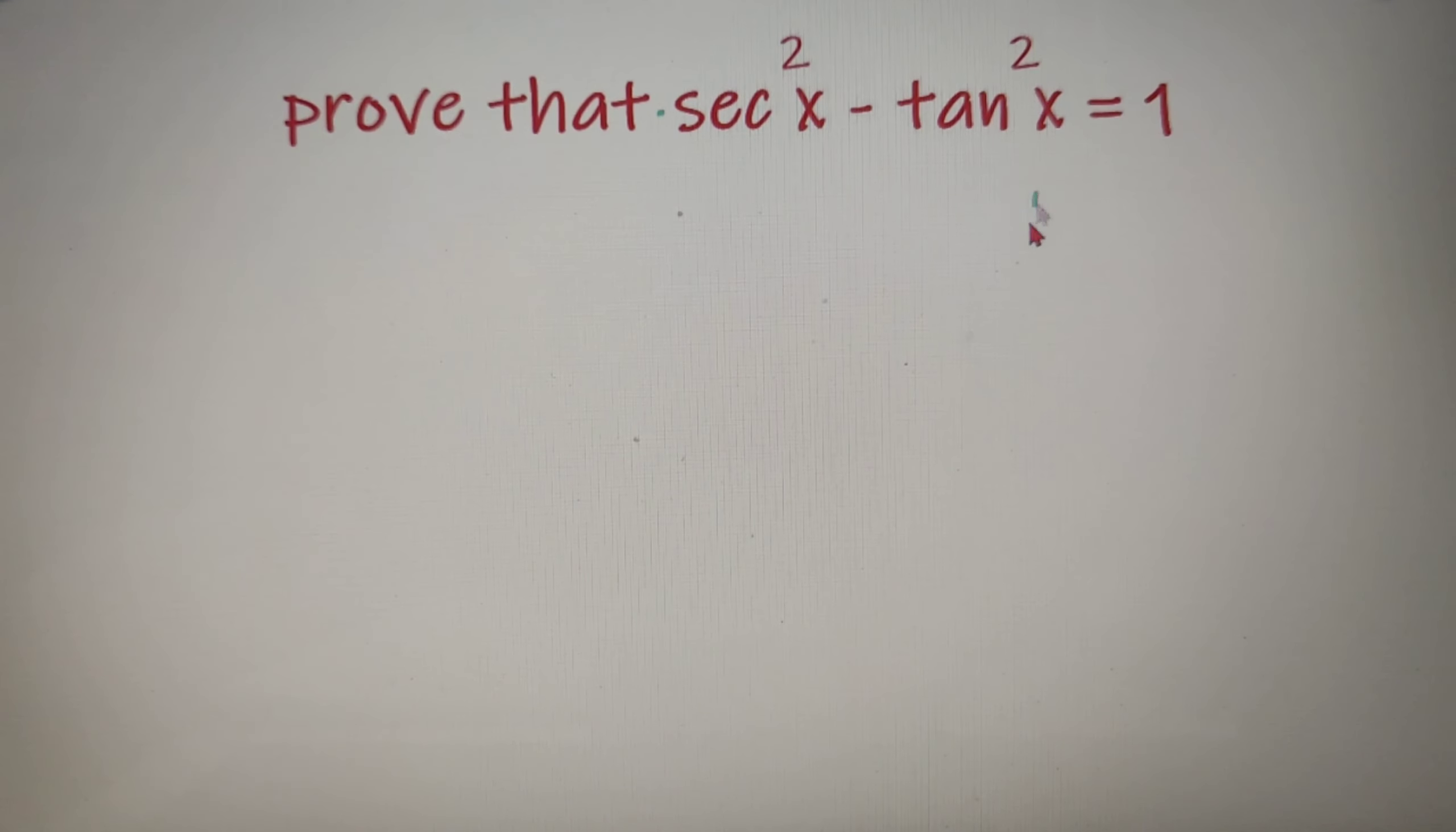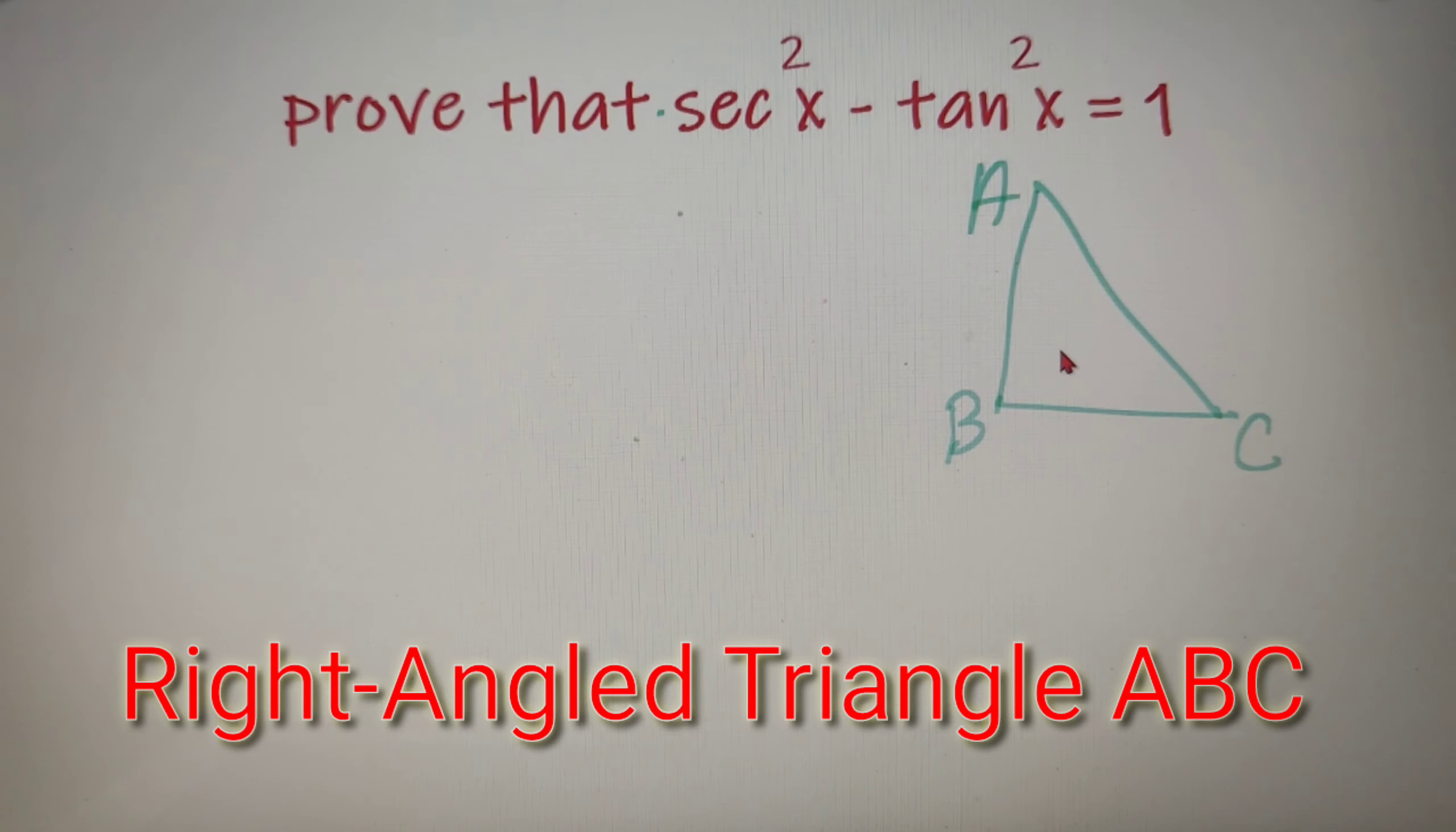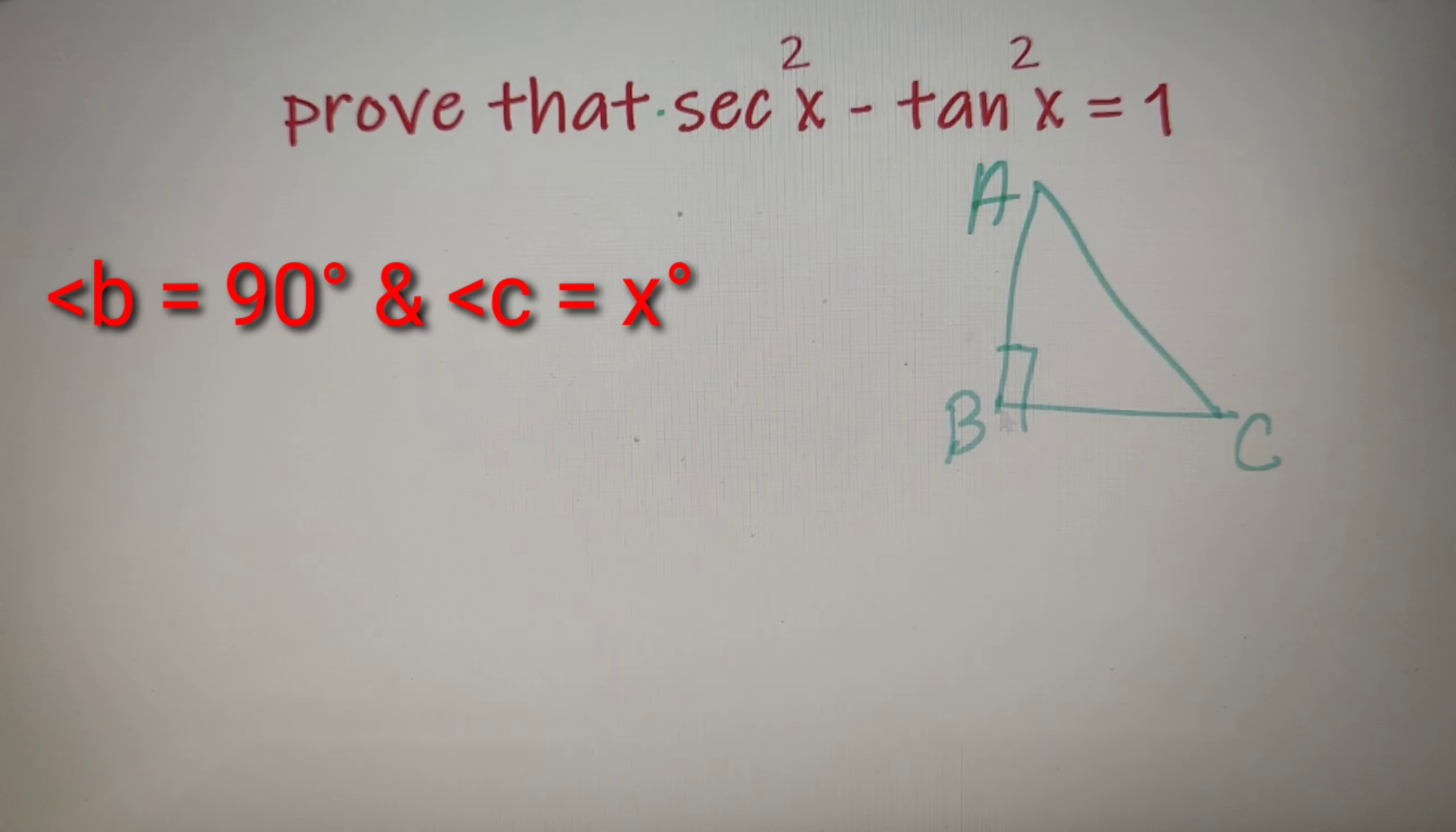Moving ahead with our topic, let's draw a very simple right-angle triangle, let's say ABC and the triangle is right-angled at the vertex B. So we can say that angle B is equal to 90 degrees and angle C is equal to x.